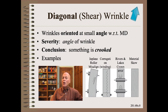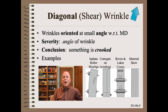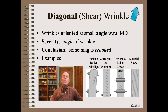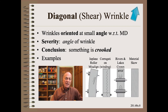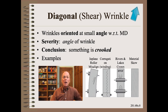We then moved on to the more common Diagonal Sheer Wrinkle. It is easy to recognize this major type, because the trough, bulge, crease, fold-over, or whatever you call it, is at an angle. We learned how to measure severity by the angle of the wrinkle. In all sub-cases, the root cause is something — either the web or web machine — that is crooked.